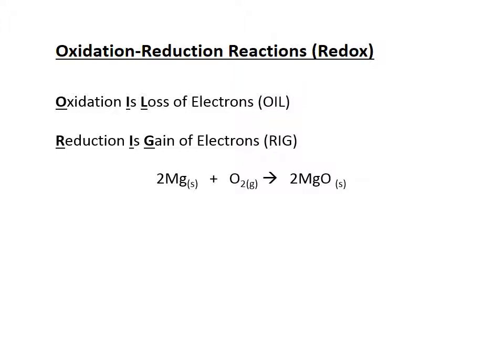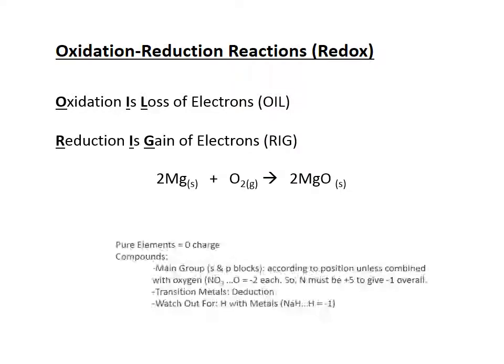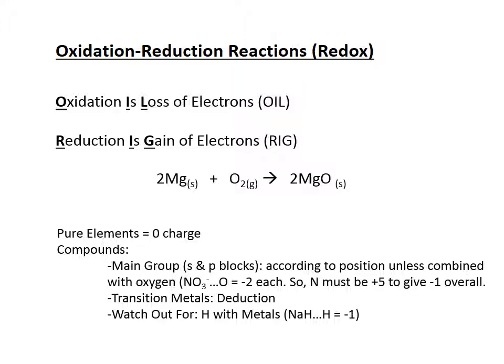With magnesium and oxygen forming magnesium oxide, we need to assign charges to everything on the reactant and product side. Any element by itself — even oxygen with two atoms as we'd find it in nature — has a zero charge. Compounds are more difficult, but generally anything from the A groups on the periodic table — the first two groups and the last six — will reflect charges according to their position, gaining or losing electrons to achieve noble gas configurations.